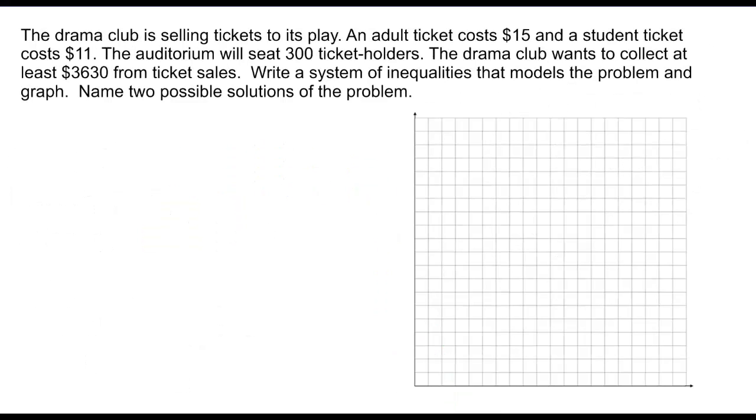So now we're going to do this in a word problem. It says the drama club is selling tickets. Adult ticket costs $15. Student ticket, $11. Auditorium will seat 300 total holders. Drama club wants to collect at least $3,600 from the ticket sales. So write inequalities to model this problem and name the two possible solutions of the problem. So there's probably more than one solution because we're shading everything. So if I want to write an equation about costs, I need to involve the money. So I take $15 for each student ticket, let's call this student ticket x. Then we'll call an adult ticket y.